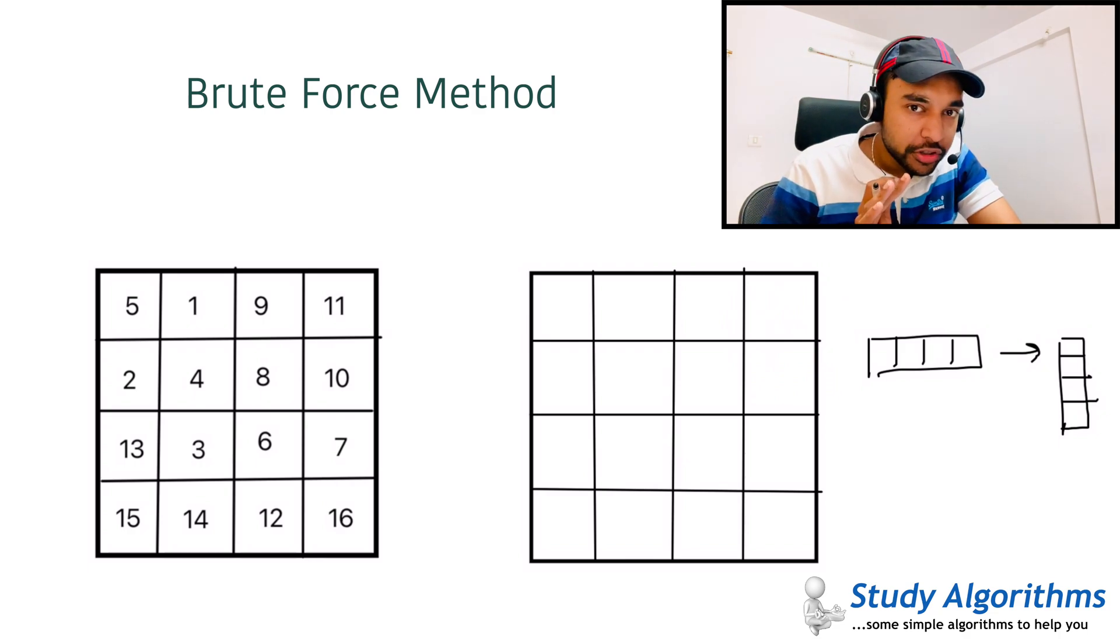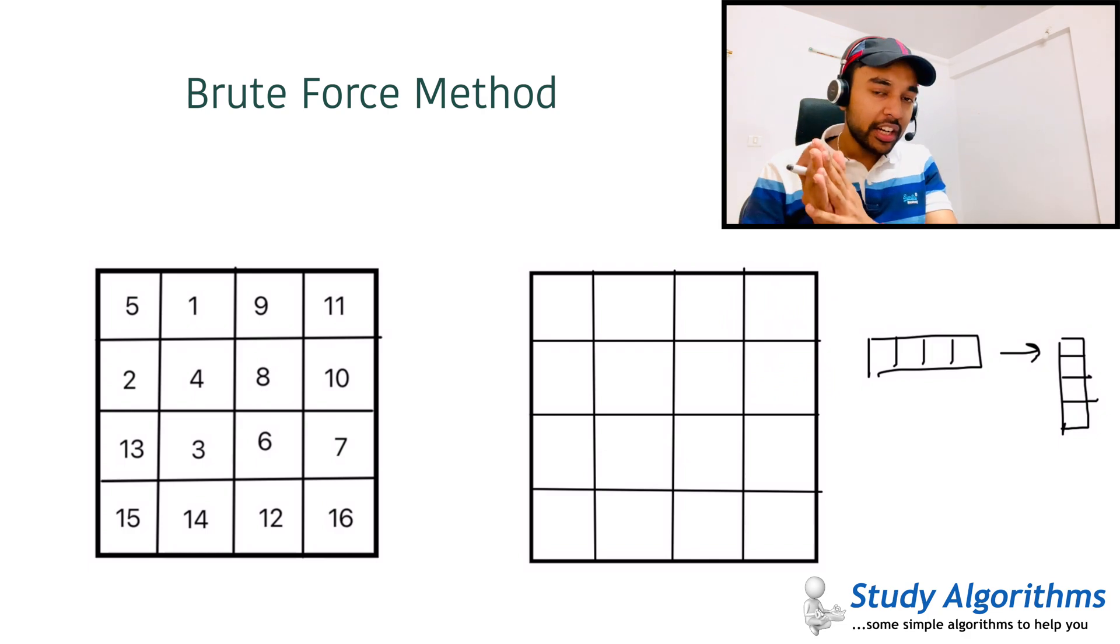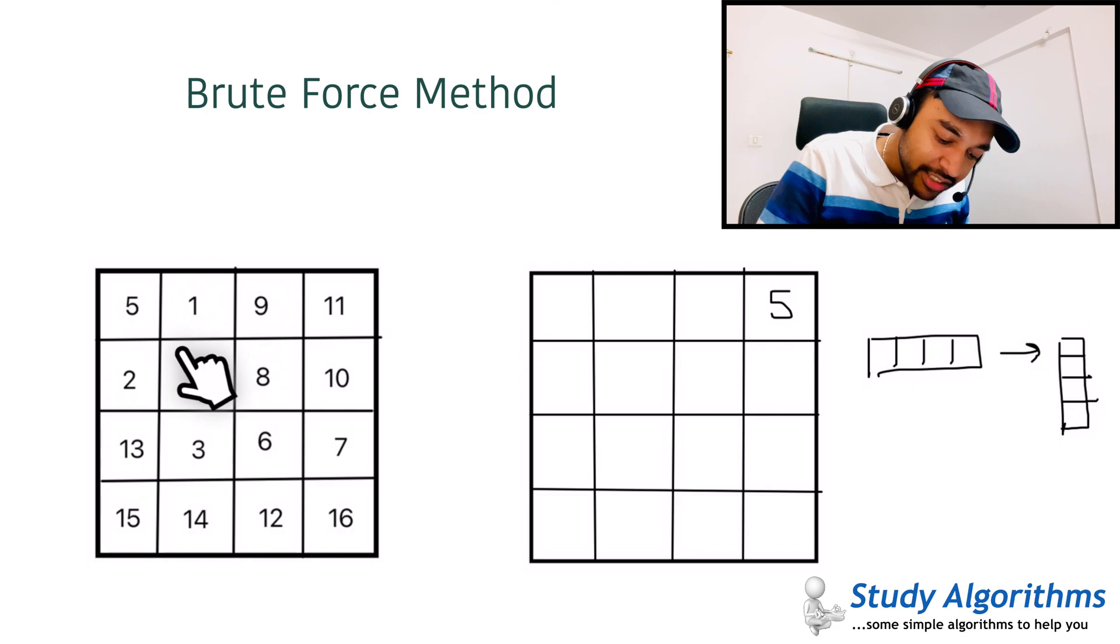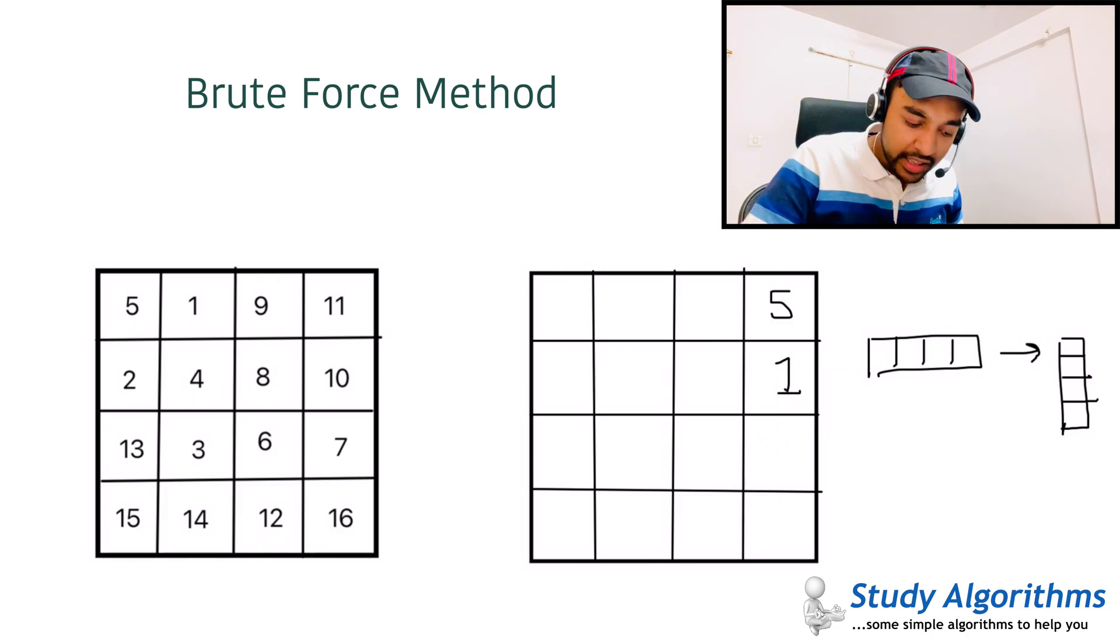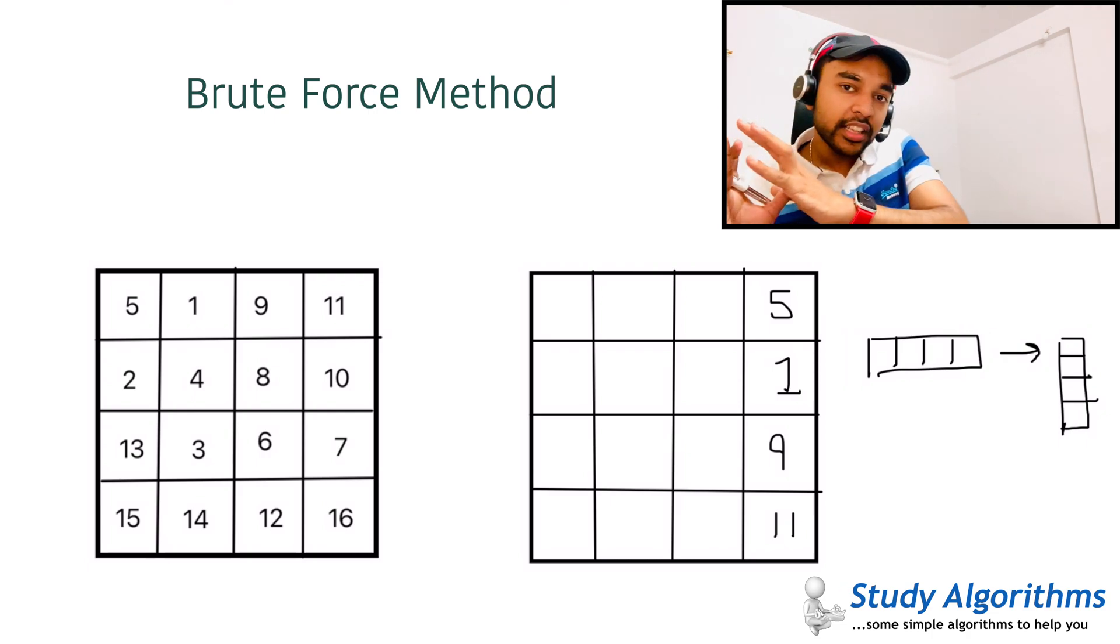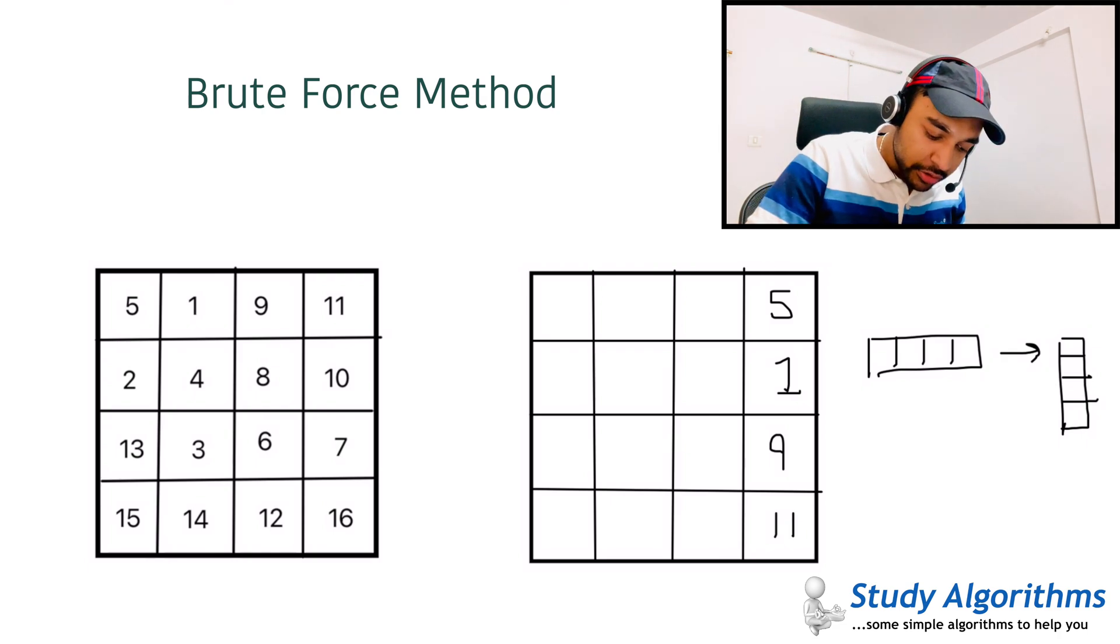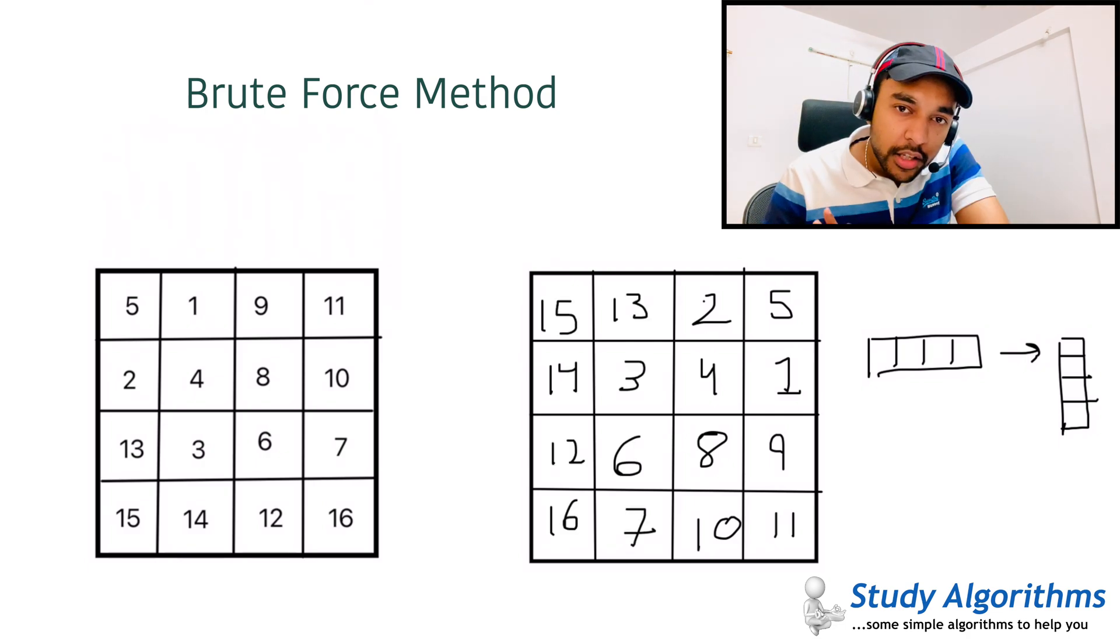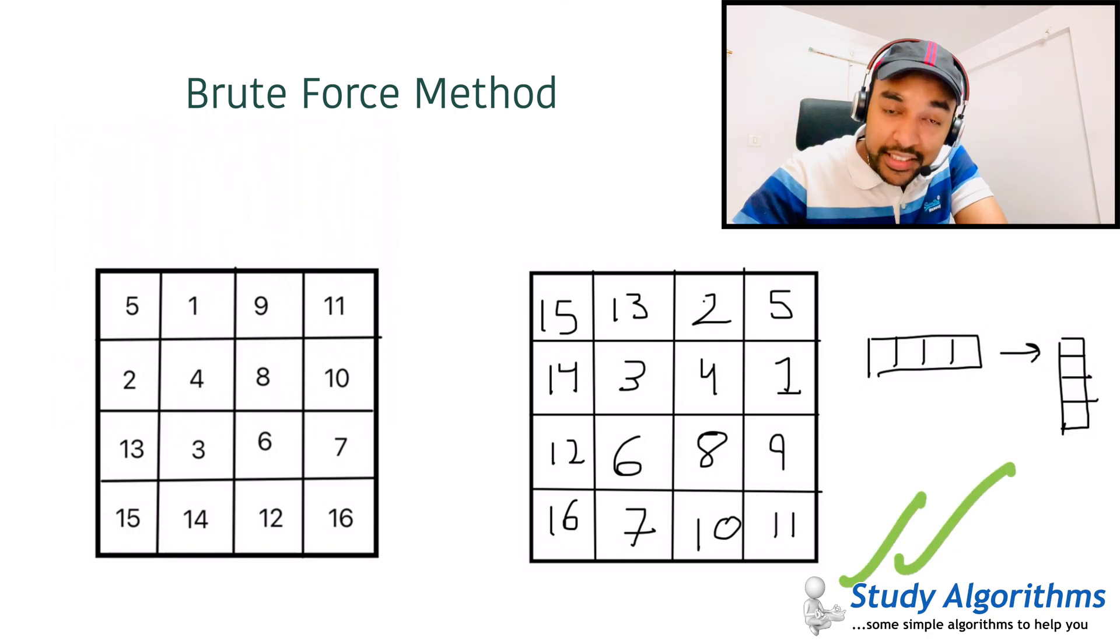For a brute force approach, what you can do is, you can simply create a new matrix of the same size. This is a blank matrix. Now, you can copy 5 at the correct position. Next, you can take this one and copy it at its new position. Then I can enter 9 and then I can enter 11. So, you can see, I am rotating the matrix. Similarly, you can do it for all the other elements also. And ultimately, you can fill up this entire matrix. You can see that this is your final rotated matrix and in fact, this is the correct answer.